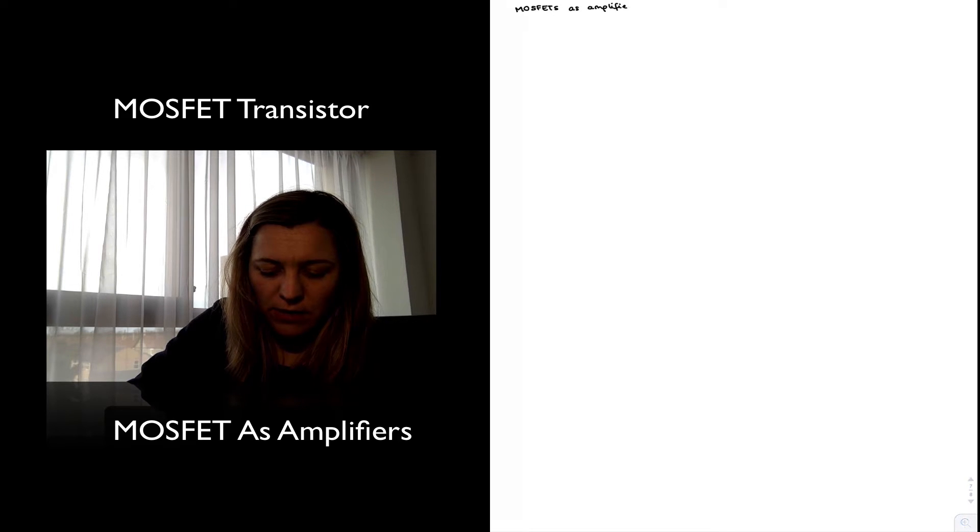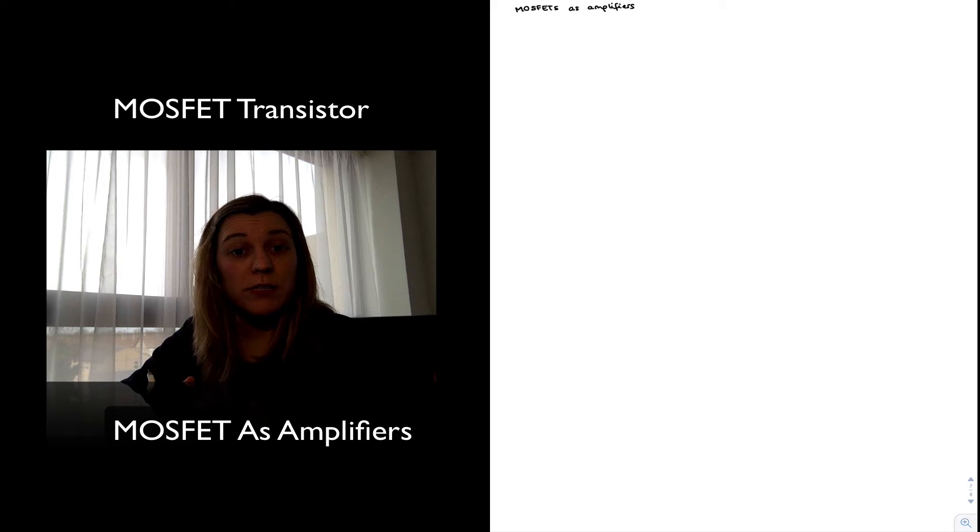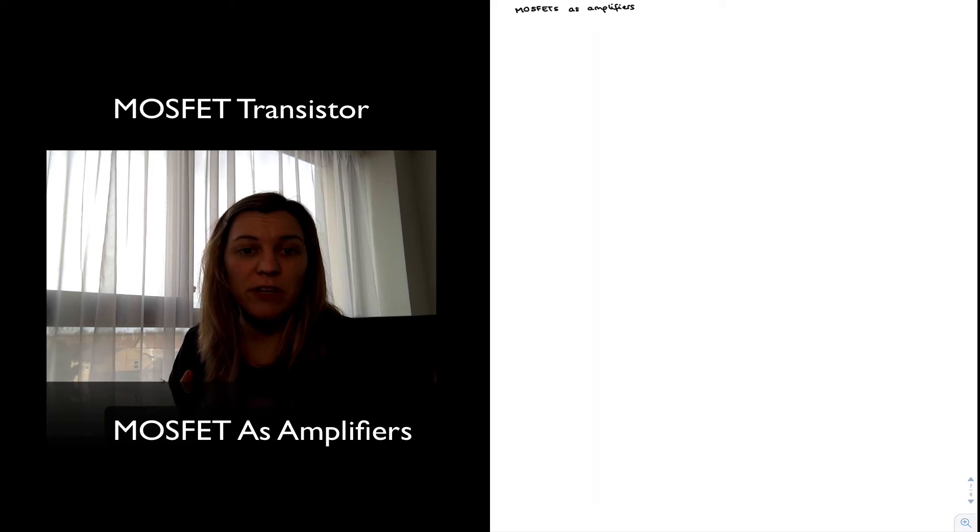We have already said that when we are designing amplifiers, we are going to use the MOSFET in the saturation region, where the MOSFET essentially behaves as a transconductance amplifier, where it outputs a constant current, or an almost constant current, which depends on the input signal VGS. So an input voltage controls an output current.